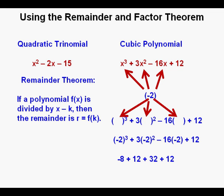And here's the next step, finding the values of each of the terms. So we have negative 8 plus 12 plus 32 plus 12. And that total is 48.